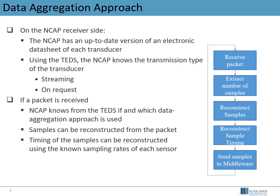Then, using the received frame number and comparing it with the last received frame number stored locally on the NCAP, the timeline of the received packet can be verified. Additionally, using the information about the measurement rates of each sensor extracted from the electronic datasheet together with the frame number, the timestamp of each sample of each sensor can be reconstructed. If a middleware is defined, the reconstructed samples are sent to the middleware.